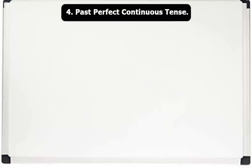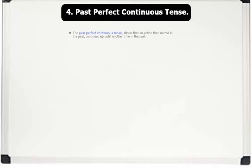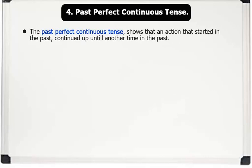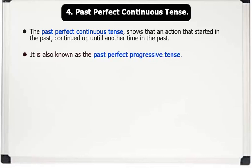4. Past perfect continuous tense. The past perfect continuous tense shows that an action that started in the past continued up until another time in the past. It is also known as the past perfect progressive tense.